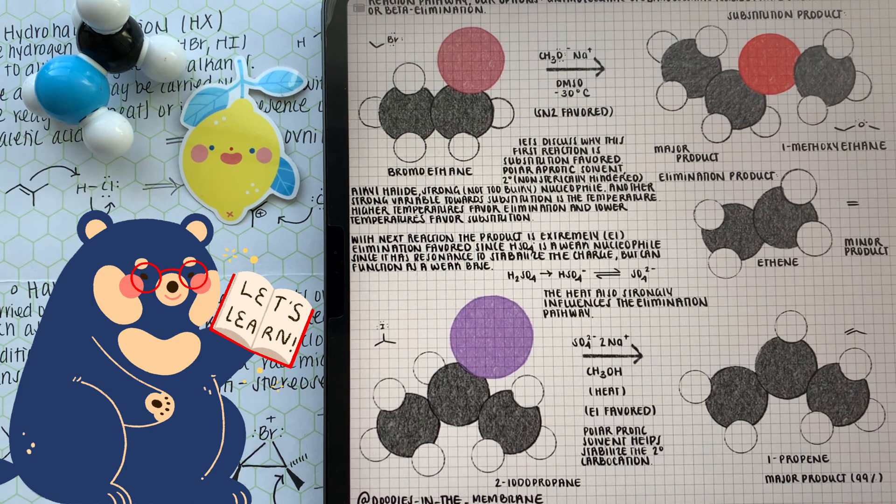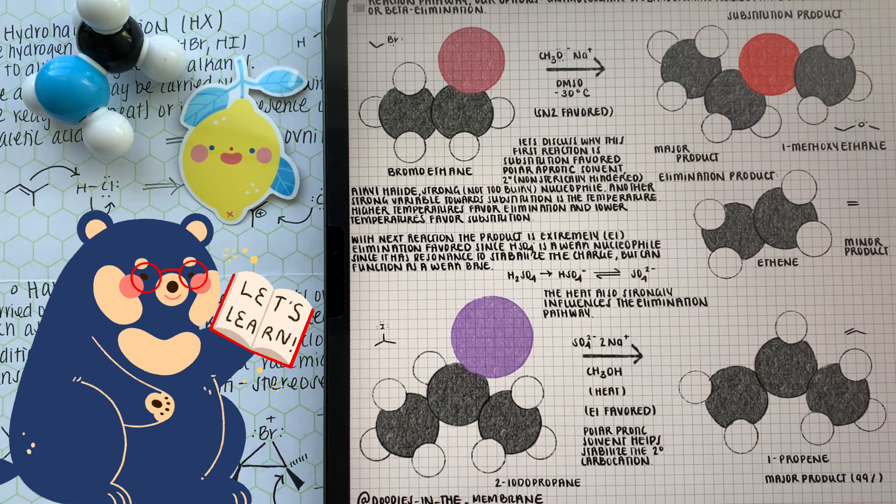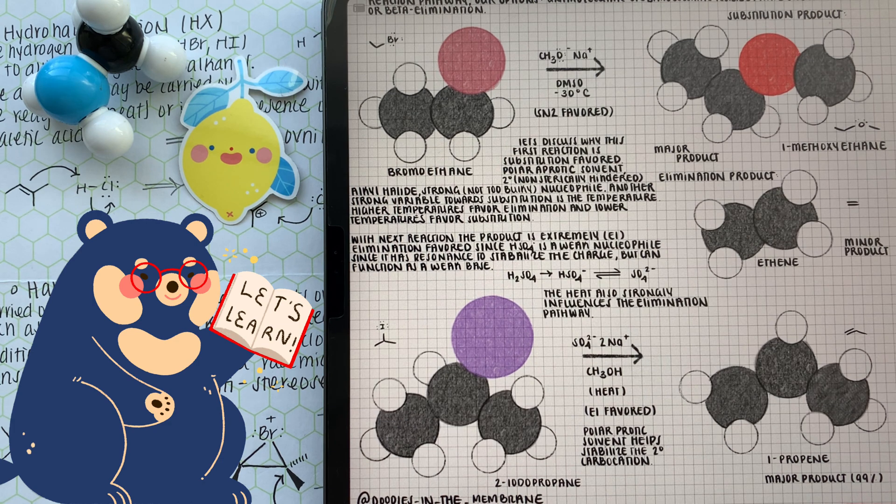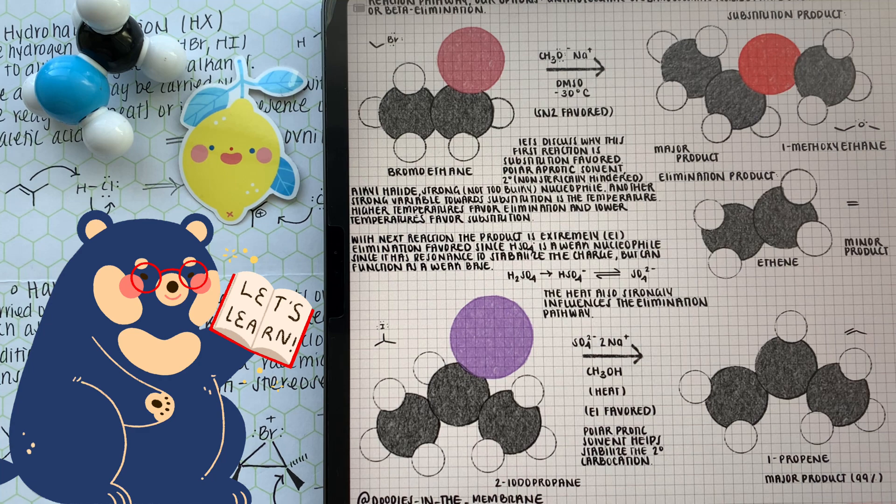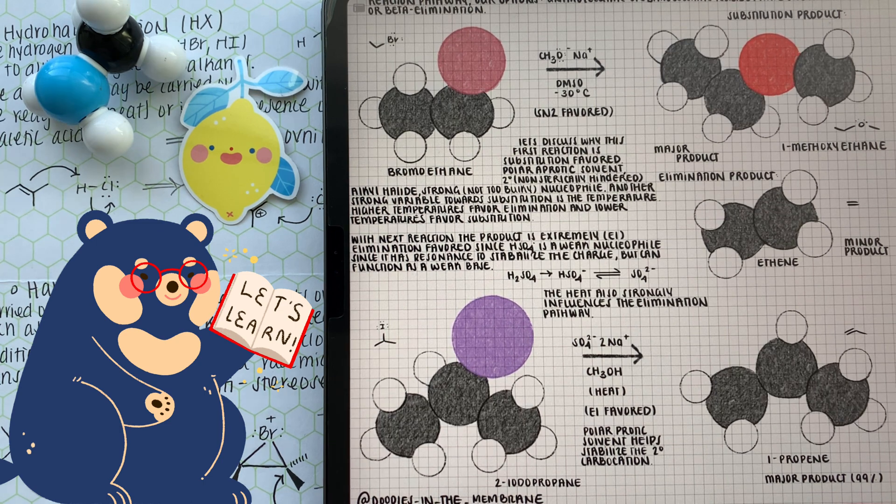We have our base as SO4 2-, which is a good base, but not so good as a nucleophile since it has resonance. On top of that, we have a secondary alkyl halide, which is great for SN1 and E1, but since this condition is heated with a strong base, but not a strong nucleophile, it definitely leans over to the E1 pathway, hence why we have a major product of around 99%.